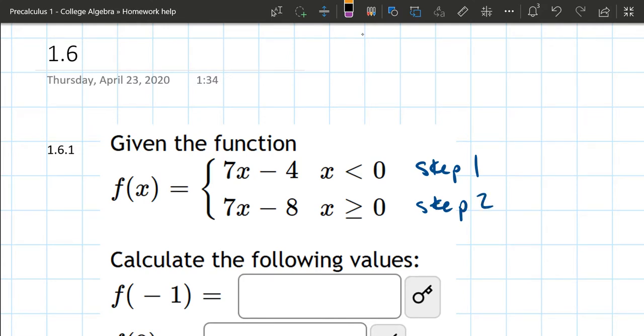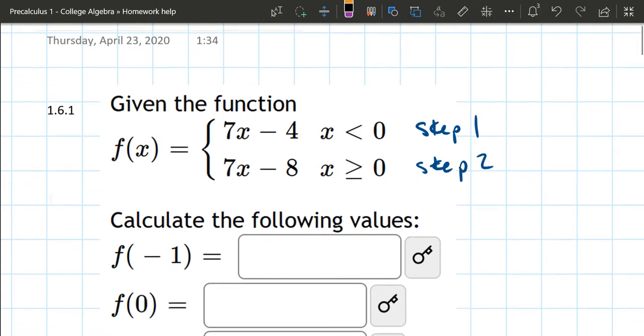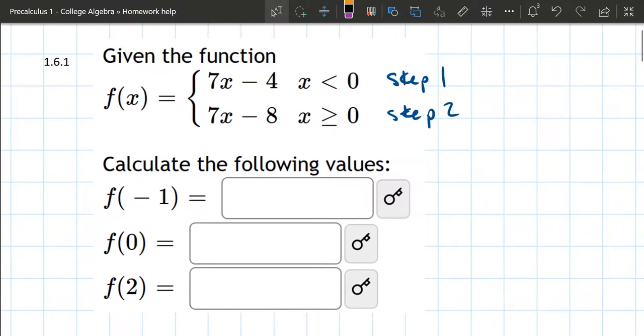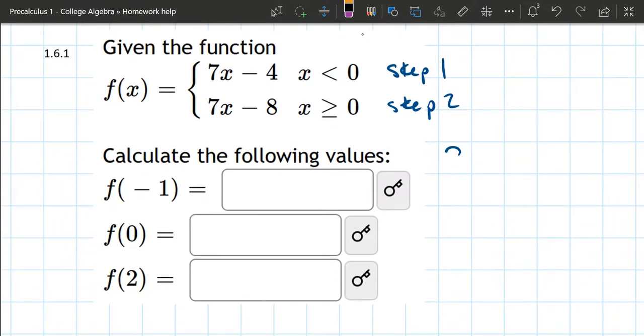Now it's important to know what step you're going to be plugging in here. So our first one, f of negative 1. This means x is negative 1, and we know negative 1 is less than 0. So we're going to be plugging this value into the first step, because x is negative.